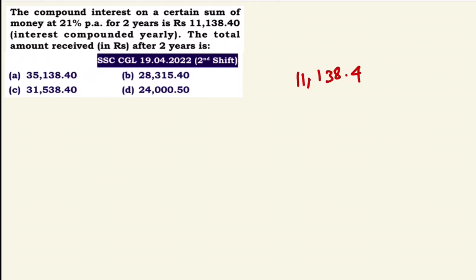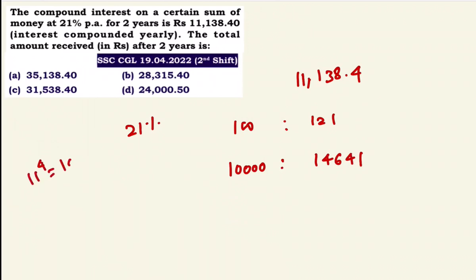Now, principal with 21% rate of interest. First year ratio: 100 to 121. Second year: 121 squared is 14,641. So 11 to the power 4 is 14,641 — that is 121 squared.